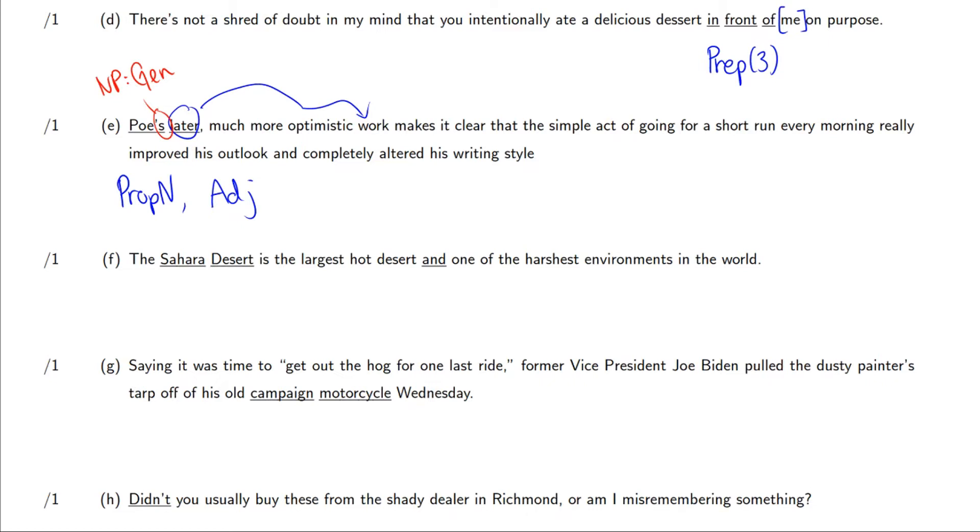In F, we have the Sahara Desert, which is a two-word proper noun. You could include the as part of the proper noun to make it a three-word, but that is confusing about whether it's a definite article or a proper noun. So I decided to not include it. And then we have and here. So the question is, with and, is it a correlative or coordinating conjunction?